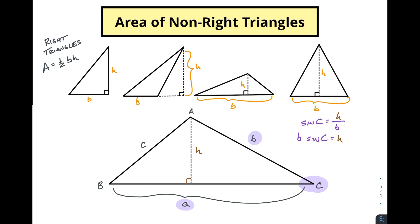Since B sin C equals our height, the area of this triangle is going to be one-half A times B sin C — where B sin C is the equivalent of our height. So the area equals one-half AB sin C. Just like that, we've got the area of a non-right triangle.